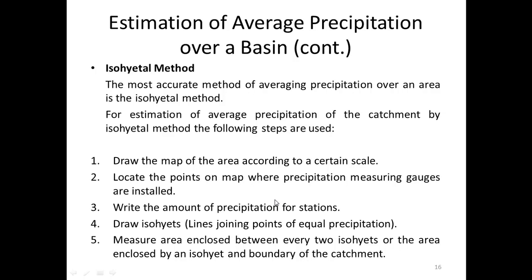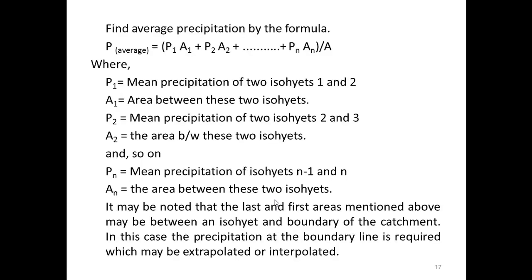The following steps are used: Step 1: Draw a map of the area to a certain scale. Step 2: Locate the points on the map where precipitation measuring gauges are installed. Step 3: Write the amount of precipitation for each station. Step 4: Draw isohyets — lines joining points of equal precipitation. Step 5: Measure the area enclosed between every two consecutive isohyets, or the area enclosed by an isohyet and the boundary of the catchment.